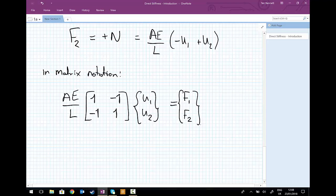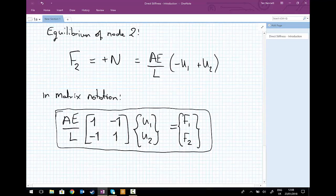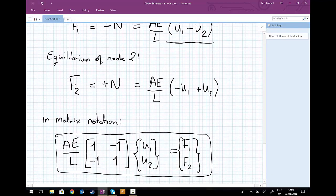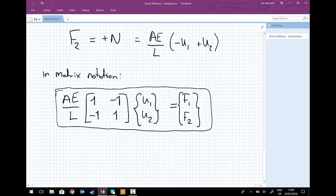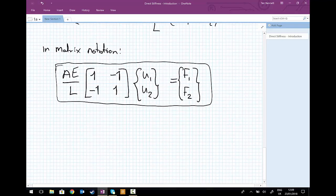So you could look at each row of this equation here individually. So you've got AE divided by L, 1 times U1 minus U2, equals F1. And then you can look at the second row of the equation similarly. And you've got AE divided by L minus U1 plus U2 is equal to F2. And this equation is really important. We've set out the KU equals F like we did earlier.